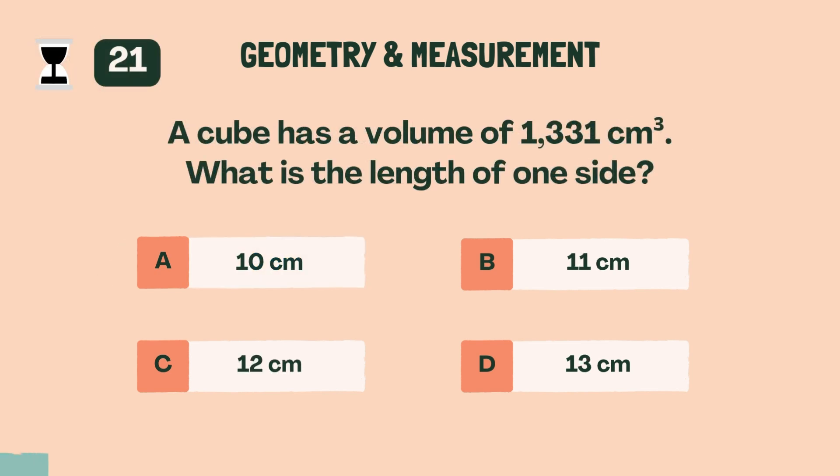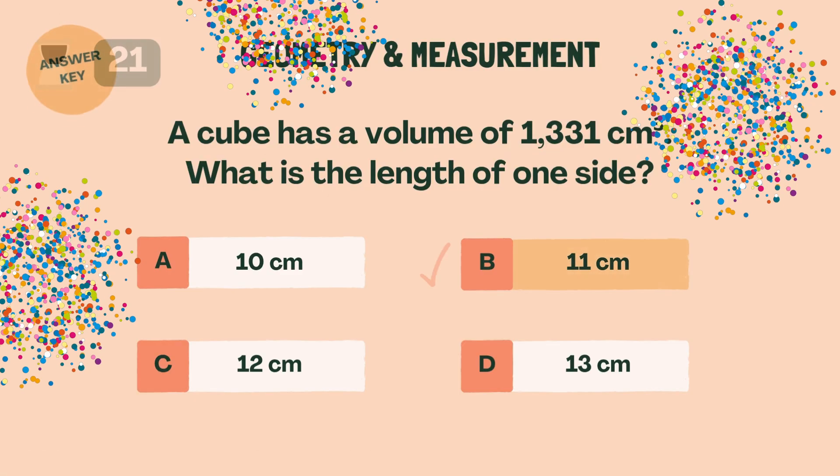A cube has a volume of 1,331 cubic centimeters. What is the length of one side? B, 11 centimeters.